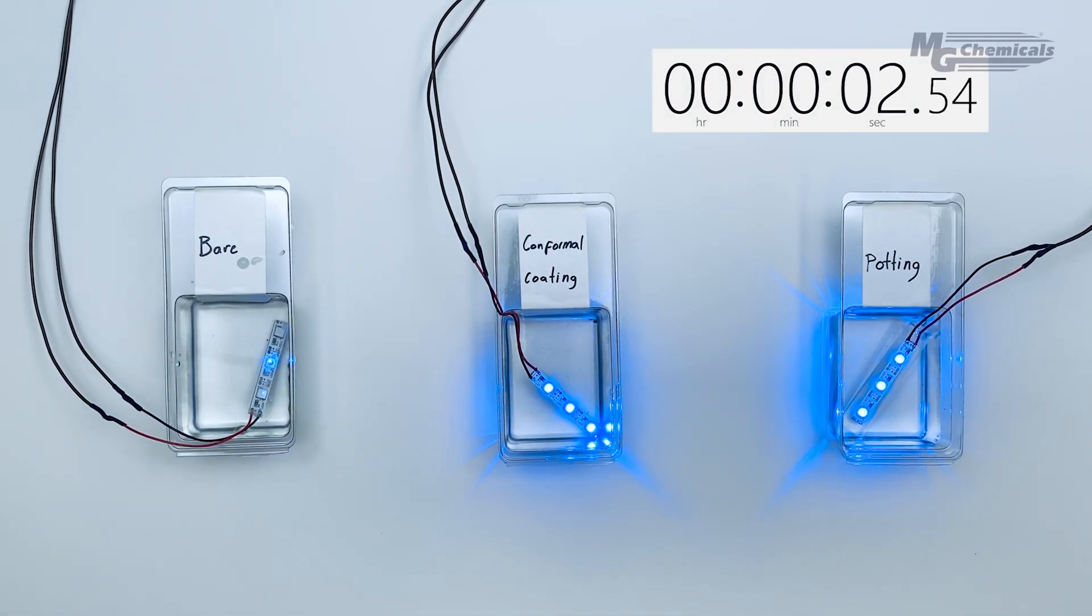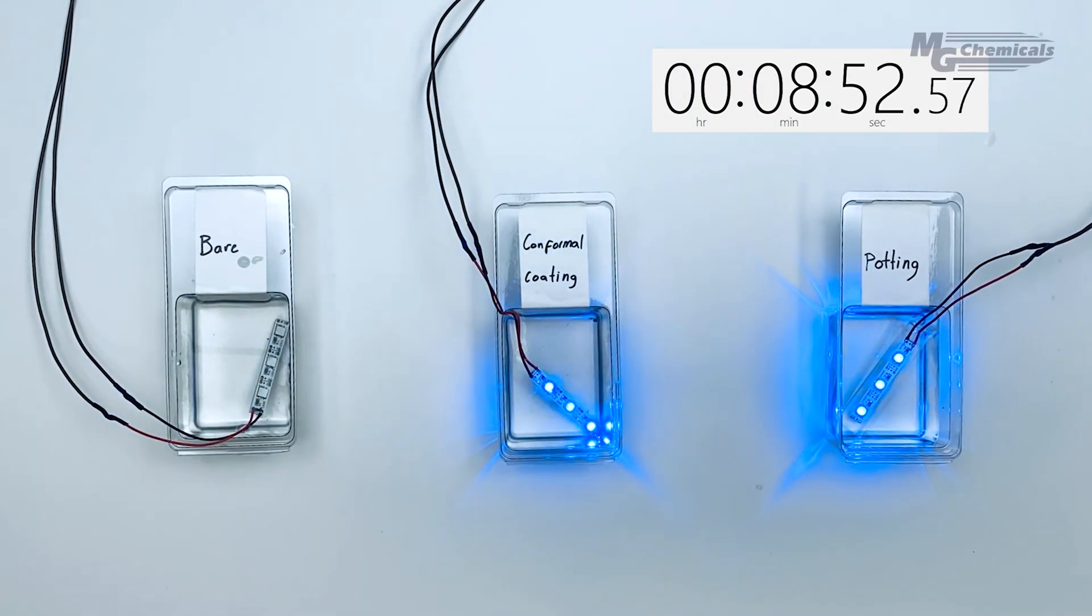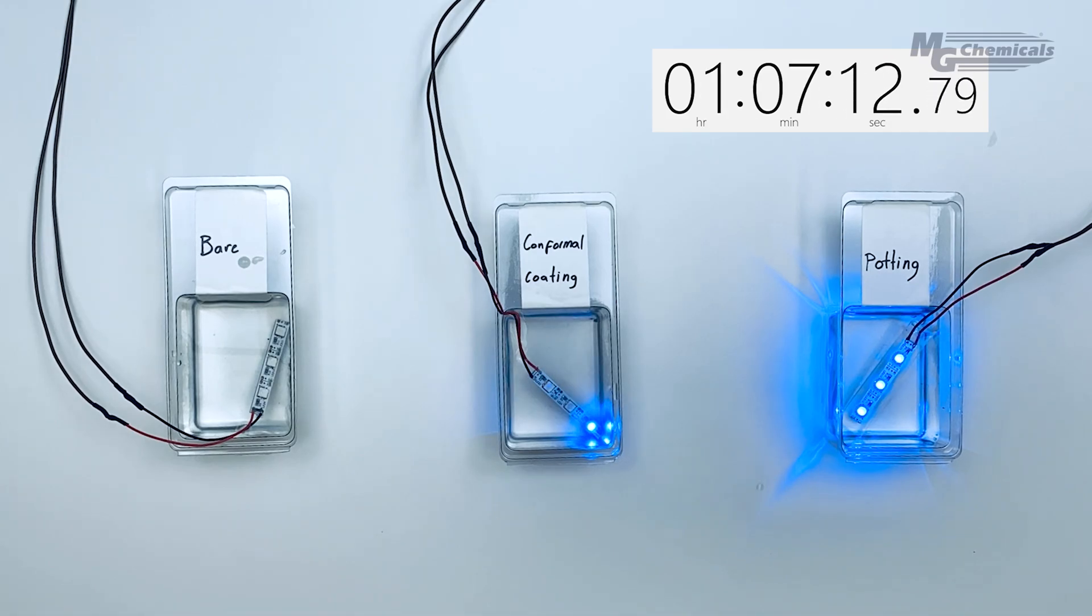Over time we see the conformally coated strip start to fail and short as the heat generated from the LEDs begins to thermally degrade the coating. The encapsulated strip holds up and prevents any short circuits from occurring.